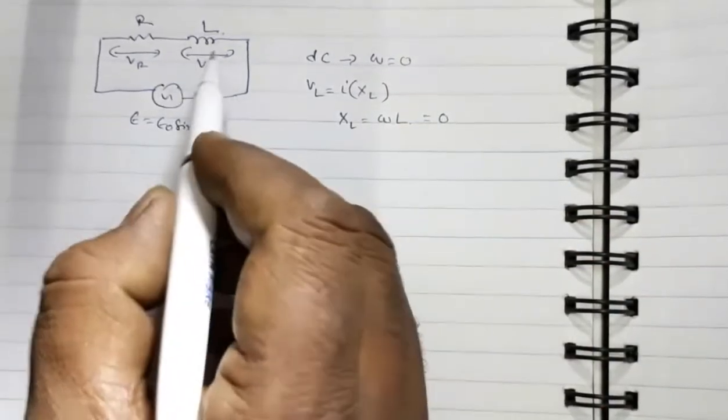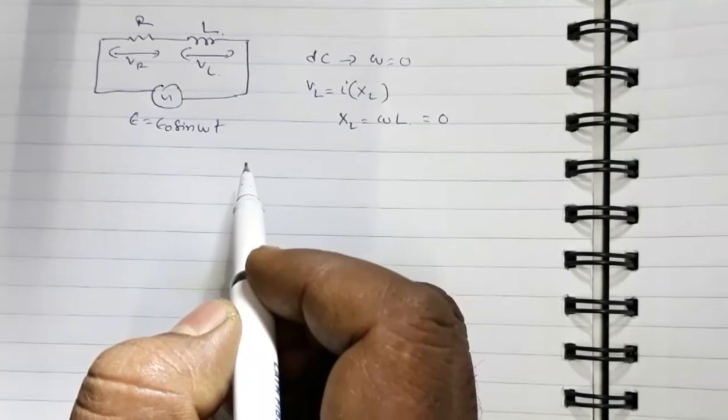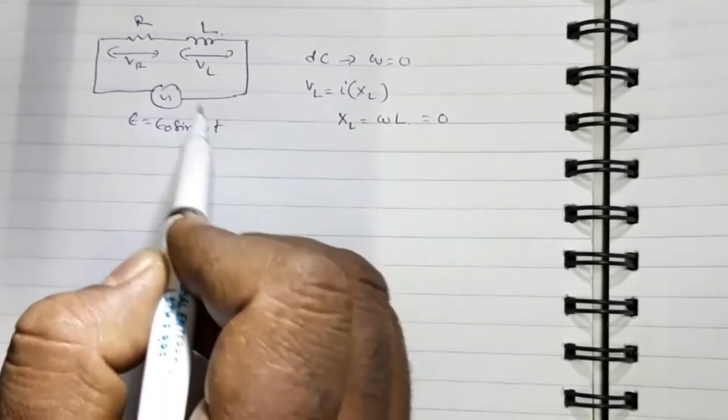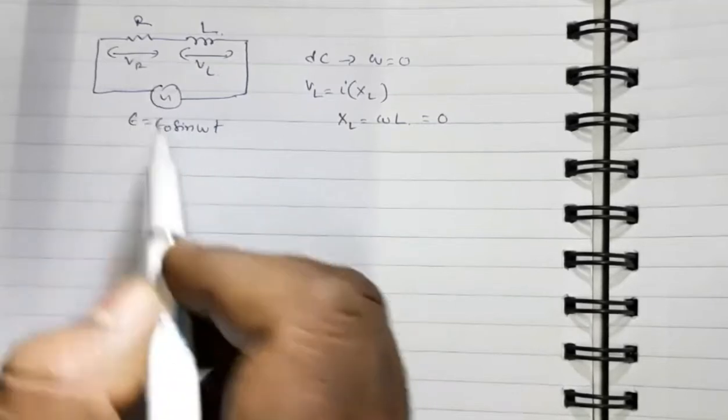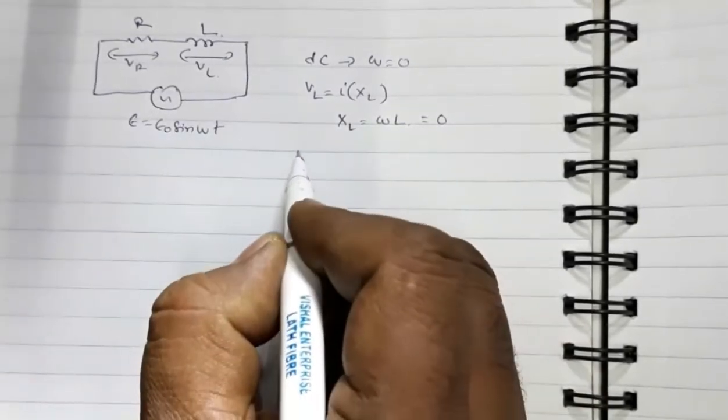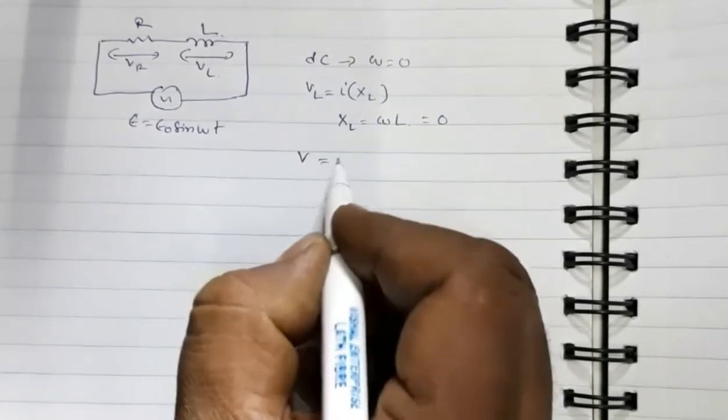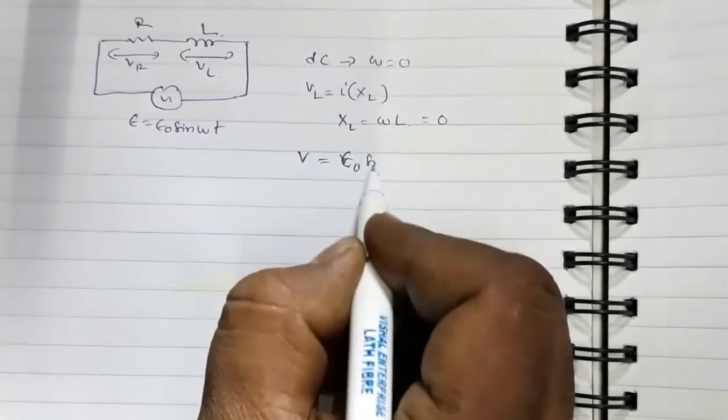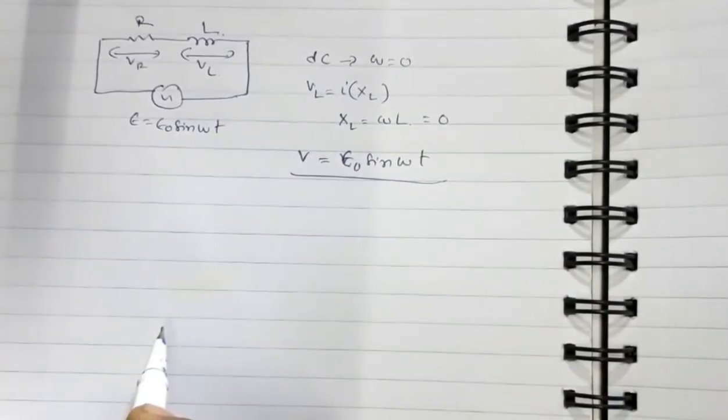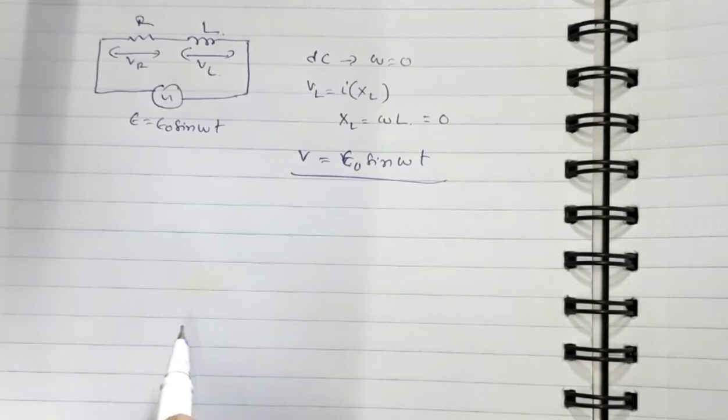This means there is no potential drop across the inductor, so the entire potential drop from the source will be available across the resistor. The potential difference in the circuit V will be E₀ sine omega t. This is the potential difference and the final answer.